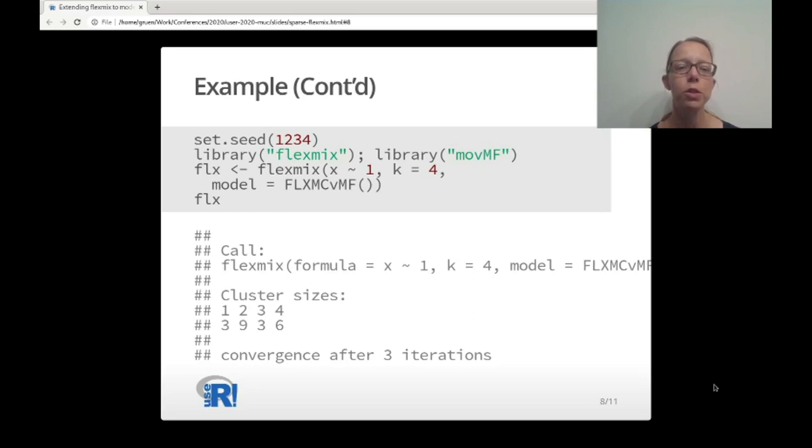FlexMix returns an object of class FlexMix which, as the print method shows, displays how it was created. It shows the information on how many observations are assigned to which cluster using the a posteriori probabilities and how many iterations did the EM algorithm take to converge.